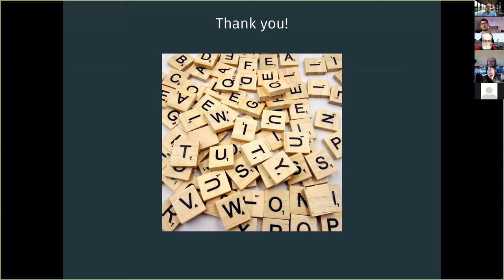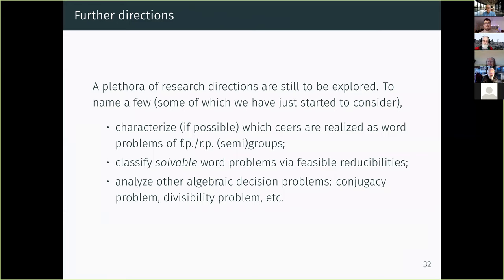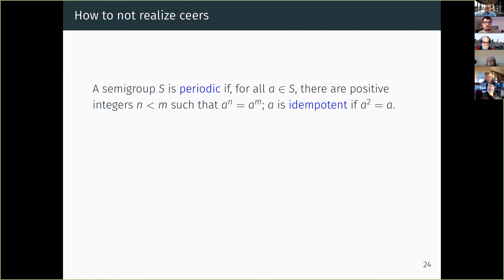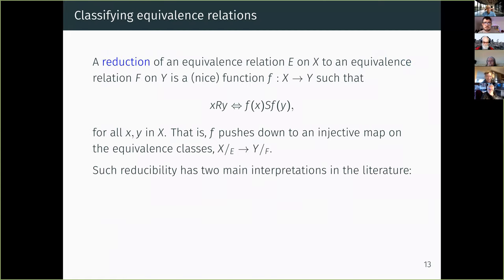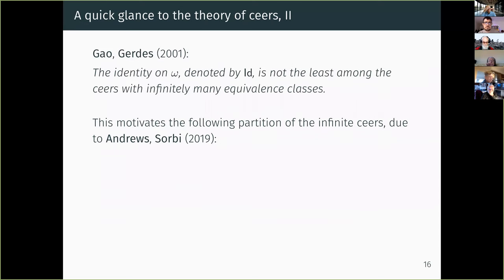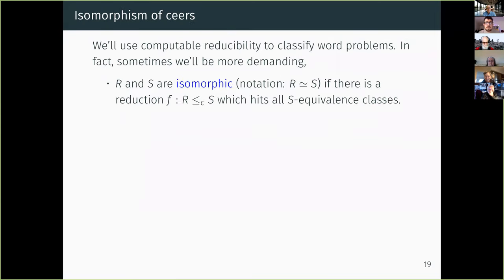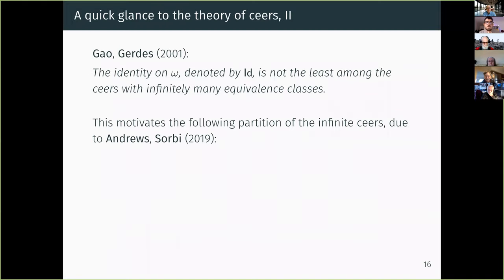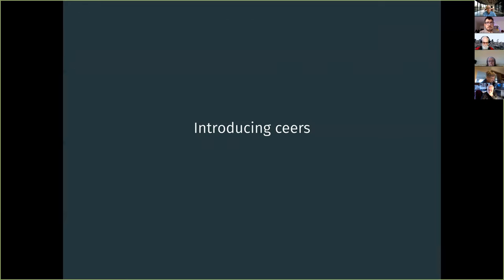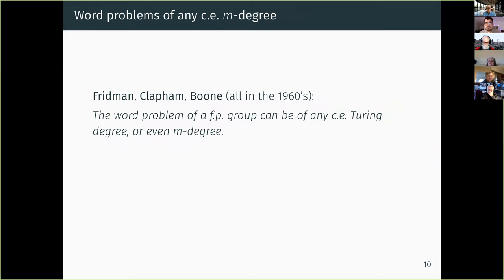By taking the Lindenbaum-Tarski algebra, there is an old result of Ershov and Kripke that there is a Boolean algebra with a word problem computably isomorphic to PA. In a recent paper, we proved that you can do that with less structure: there is a non-commutative ring — hence non-Boolean — with a word problem computably isomorphic to PA. The question we would really like to solve is whether you can do that with a finitely presented group, or just with a group even recursively presented. This seems hard because all known techniques for encoding arithmetic inside a word problem really seem to require at least two different operations to emulate Boolean connectives.